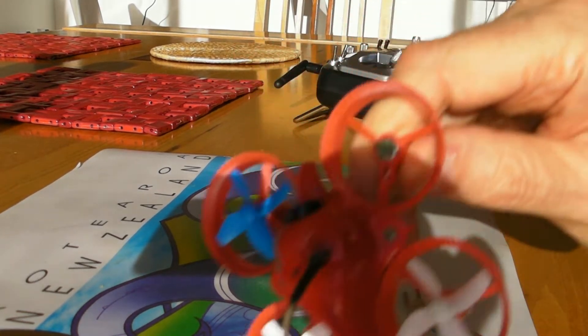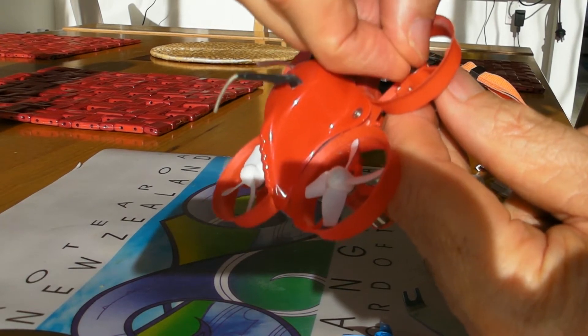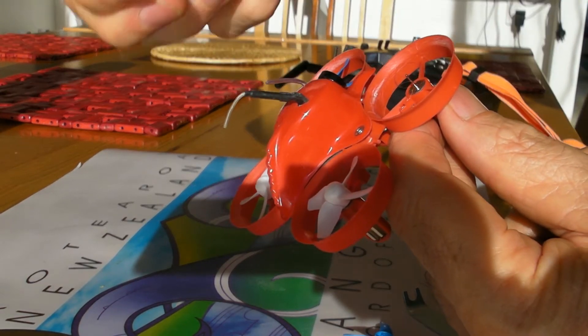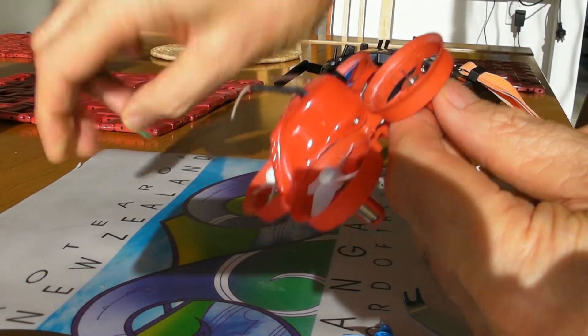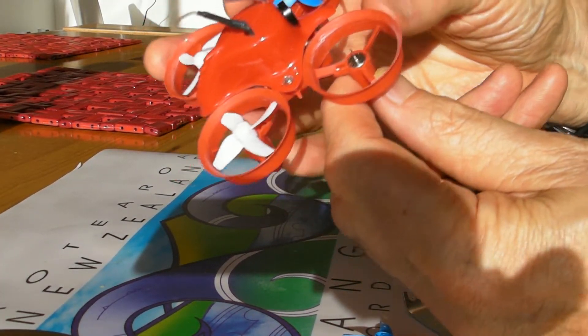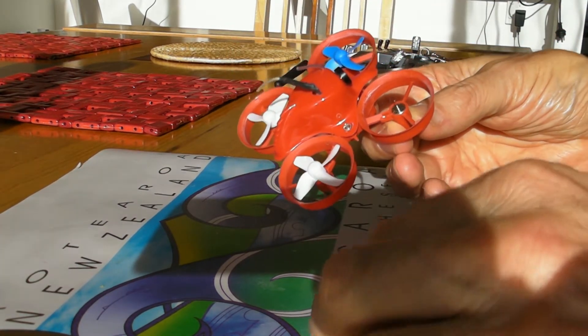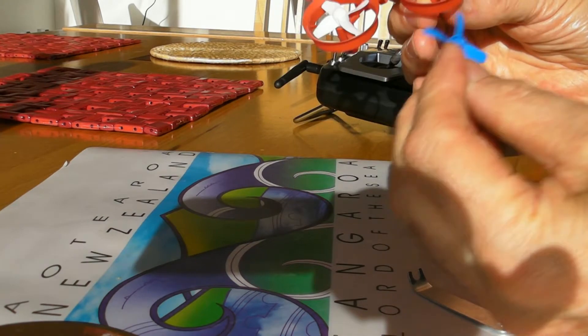Yeah, that one's got all sorts of rubbish wrapped around the propeller shaft. It's caught up a bit of fluff from somewhere. So that's all come off. In fact, you can see where it's scored a bit on the inside of the prop guard with the duct. So that's cleaned it.